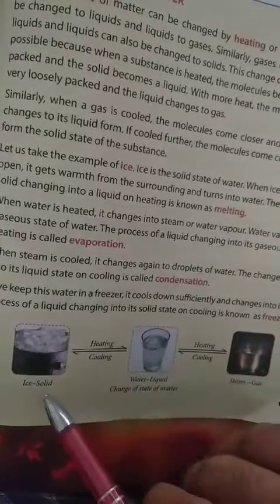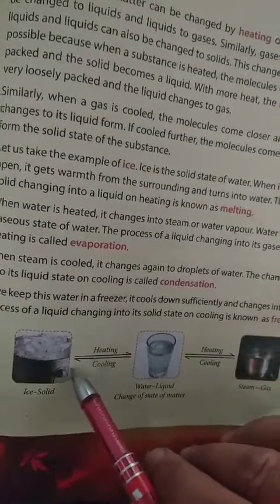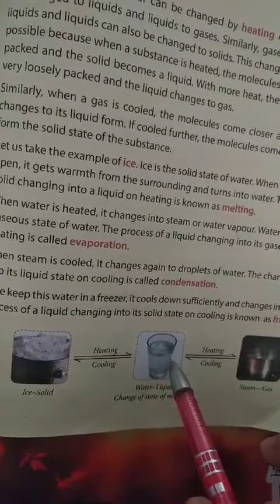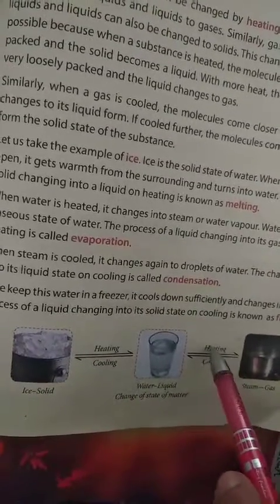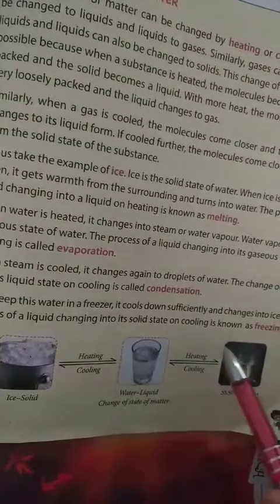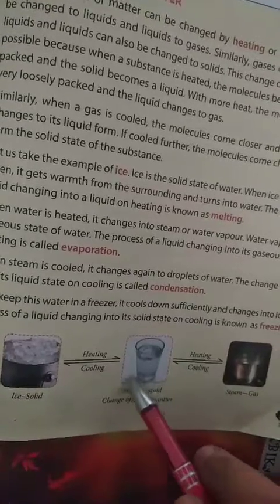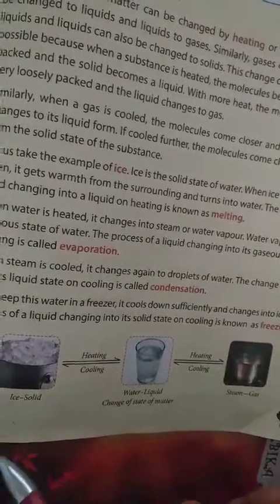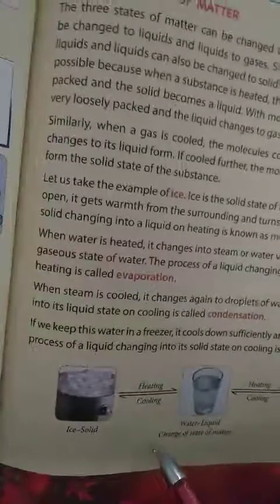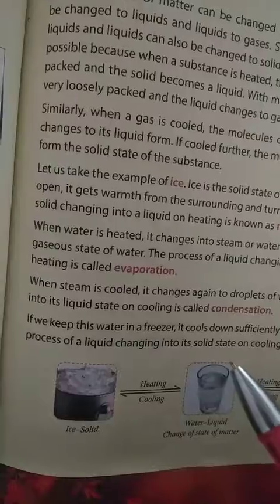To summarize: ice is solid; on heating, it becomes liquid; on further heating, liquid becomes gas. Now, if gas is cooled, it becomes liquid, and if liquid is cooled, it becomes ice — solid. Thanks students, try to understand this topic with the help of this video.